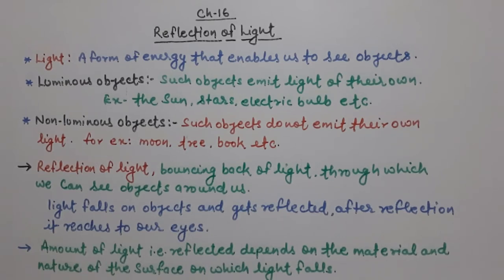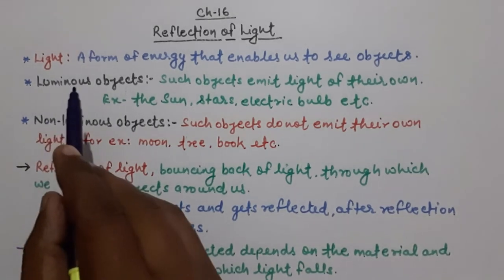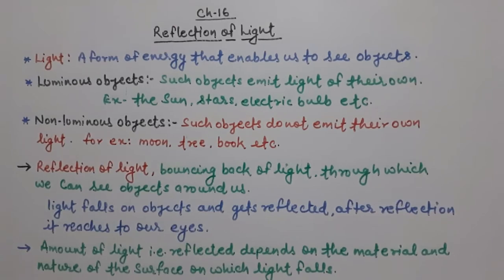You have studied Light in class 7, so first of all let us know what is light. Light is a form of energy that enables us to see objects.